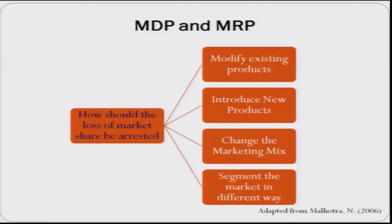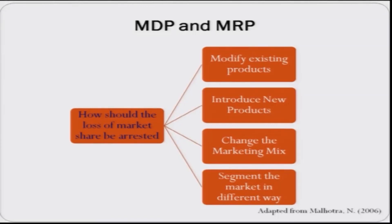Here is an example. There is a departmental store I call Kirana retail chain. This retail chain management is seeing that they are losing market share. The possible alternatives for arresting this loss of market share could be: modify existing product lines, introduce new products, change the marketing mix, reposition the product if positioning is no longer relevant, or segment the market in a different way. Any of these could help arrest the market share loss.